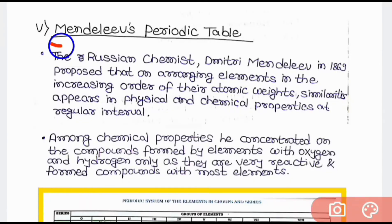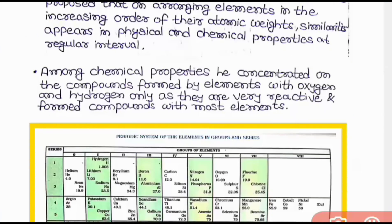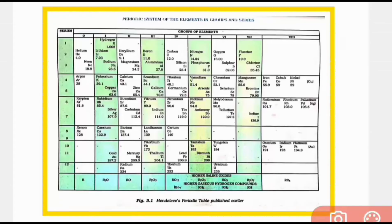Now let us come to Mendeleev periodic table. Russian chemist Dmitry Mendeleev in 1869 proposed that on arranging elements in the increasing order of the atomic weight, similarity appears in physical and chemical property at regular intervals. Point to be noted that among chemical properties, he concentrated on the compound formed by elements with oxygen and hydrogen only. The reason behind this was that oxygen and hydrogen were very reactive and formed compounds with most elements. This is the Mendeleev periodic table and you can see it more clearly on the pdf given in the description box.